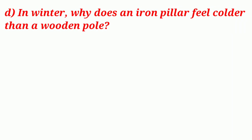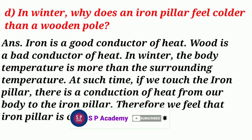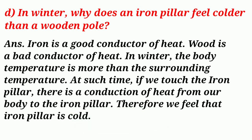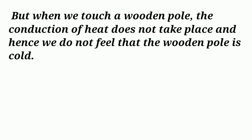Question D: In winter, why does an iron pillar feel colder than a wooden pole? Answer: Iron is a good conductor of heat while wood is a bad conductor of heat. In winter, the body temperature is more than the surrounding temperature. When we touch the iron pillar, there is conduction of heat from our body to the iron pillar, and therefore we feel that the iron pillar is cold. But when we touch a wooden pole, conduction of heat does not take place and hence we do not feel that the wooden pole is cold.